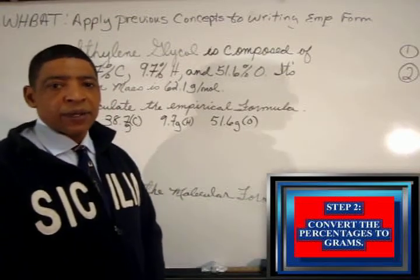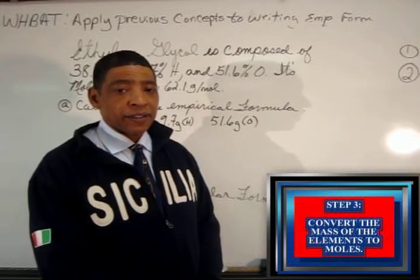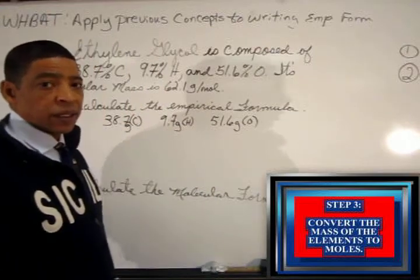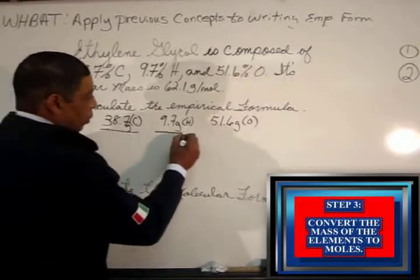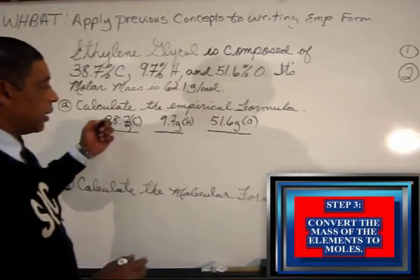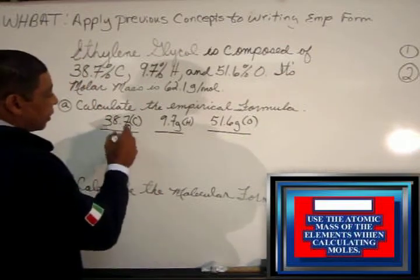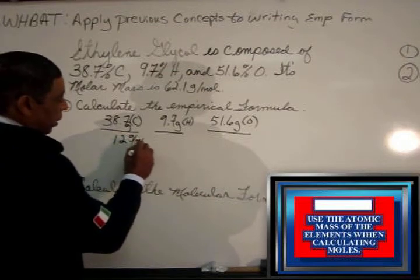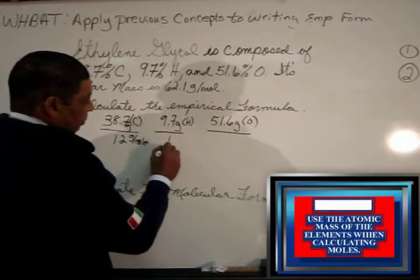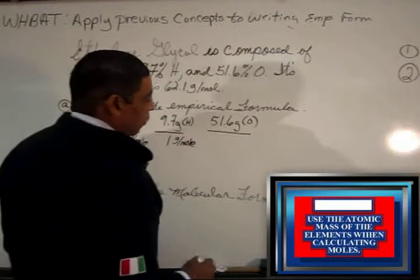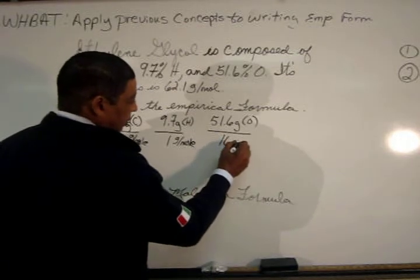Since both an empirical formula and a molecular formula represent a ratio of moles of atoms, the next step is to determine the number of moles. To do so, simply use the mole calculation, where moles are determined by dividing the given mass by the gram atomic mass. So: 38.7 divided by 12 g/mol, 9.7 divided by 1 g/mol, and 51.6 divided by 16 g/mol.